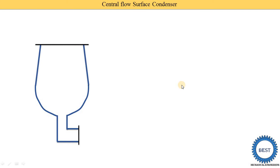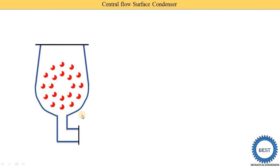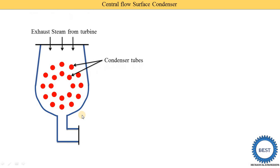Here you see the animation of the central flow surface condenser. These are the outer body or shell of the condenser. Inside this shell, there are a number of tubes through which water is passed. From outside the tubes, exhaust steam from the turbine is passed. This steam is condensed and collected in the bottom part of the condenser.